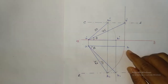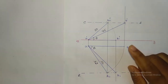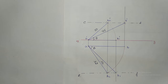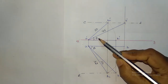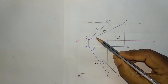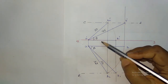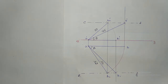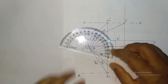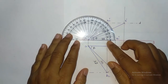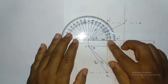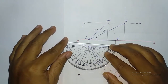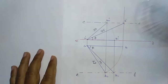So, this previous problem which I have already explained — you just calculate the values of theta and phi over here. Using the protractor, just calculate the values of theta, and from here you have to calculate the values of phi.